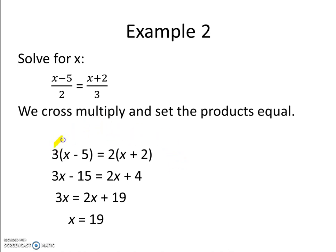Distributing that 3 to the x, we have 3x, and 3 times negative 5 is negative 15. 2 times x is 2x, and 2 times positive 2 is 4.